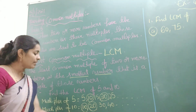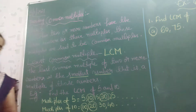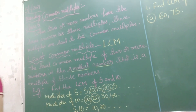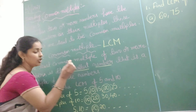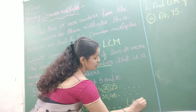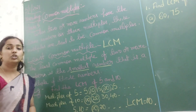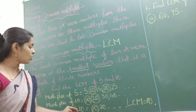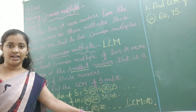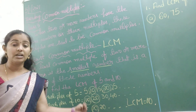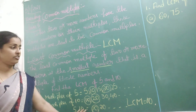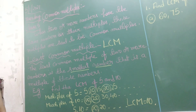So in these common multiples, which is the least one? Which is the smallest number in these multiples? That is the number 10. So the LCM is 10 — the least common multiple of 5 and 10 is 10, which is the smallest common multiple. We have many common multiples, but the least one is 10. So this is about the least common multiple, and now based upon this we are going to do the exercise.